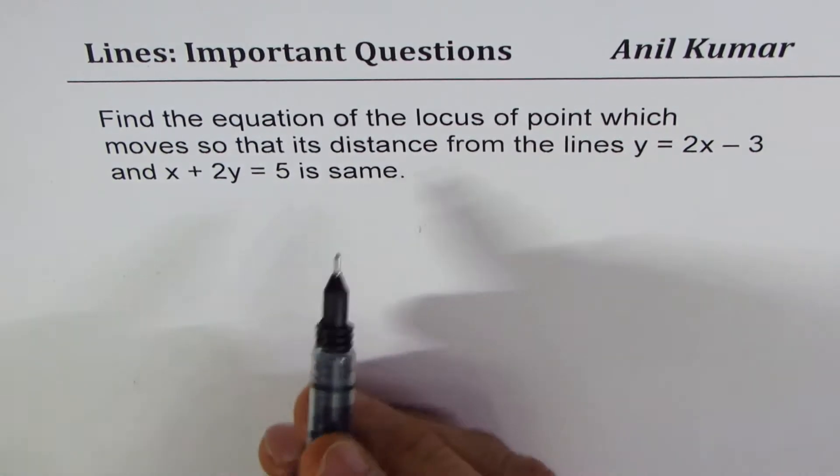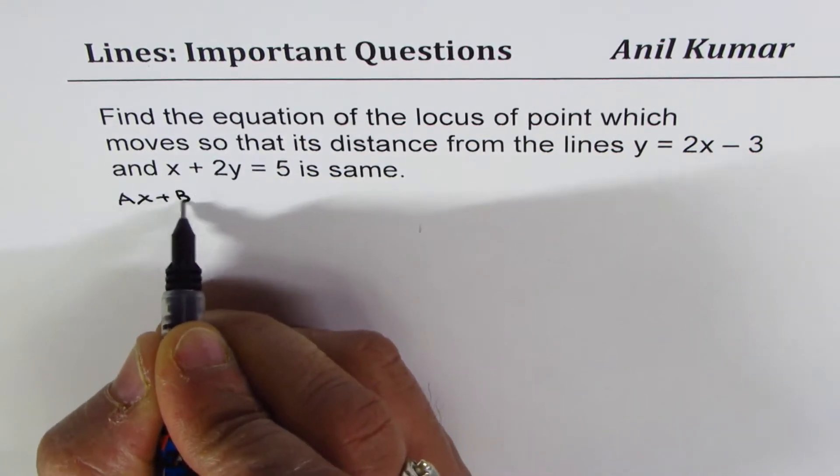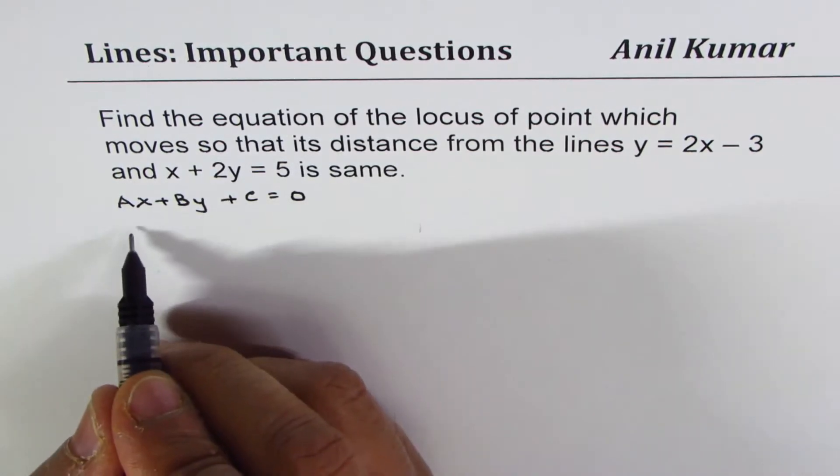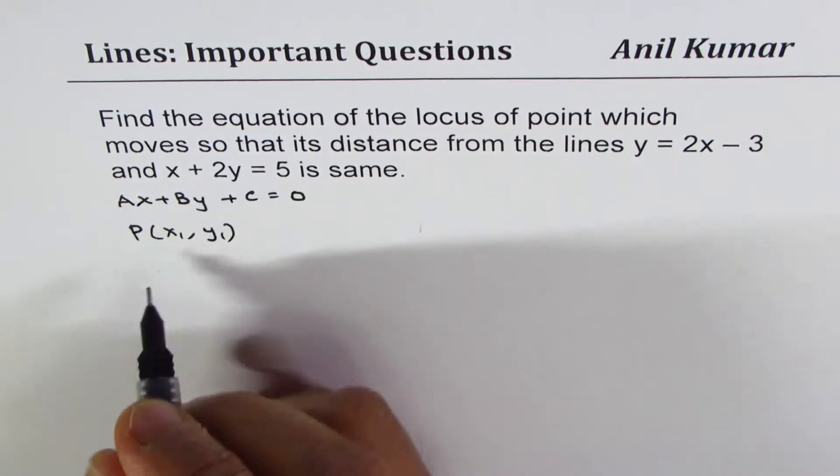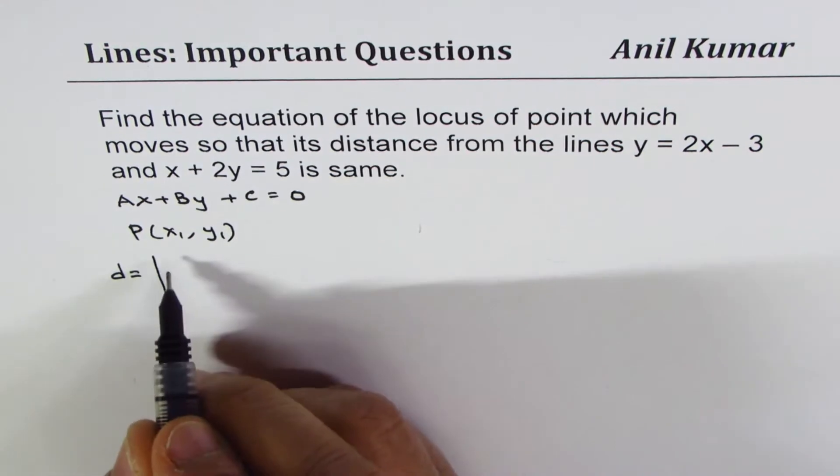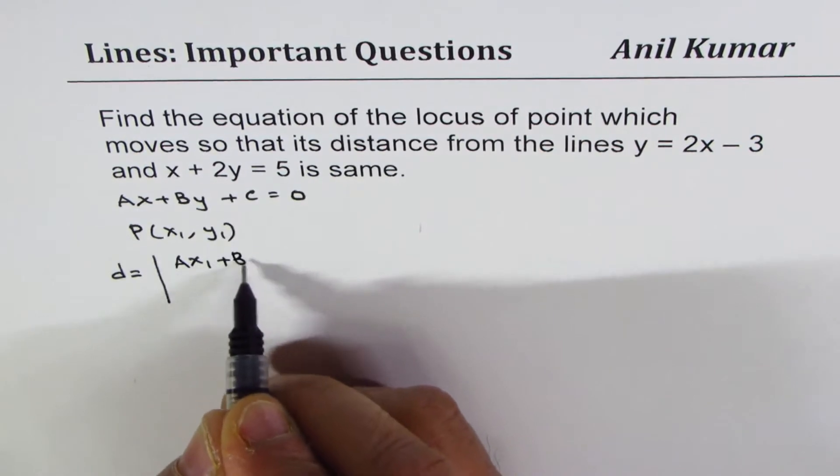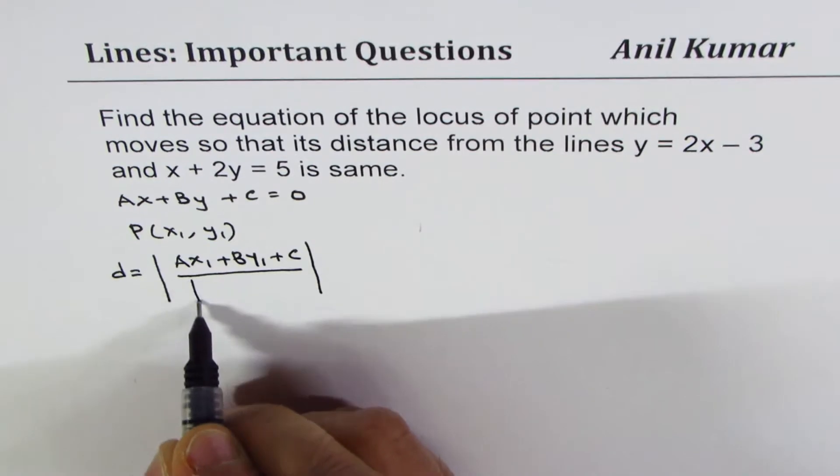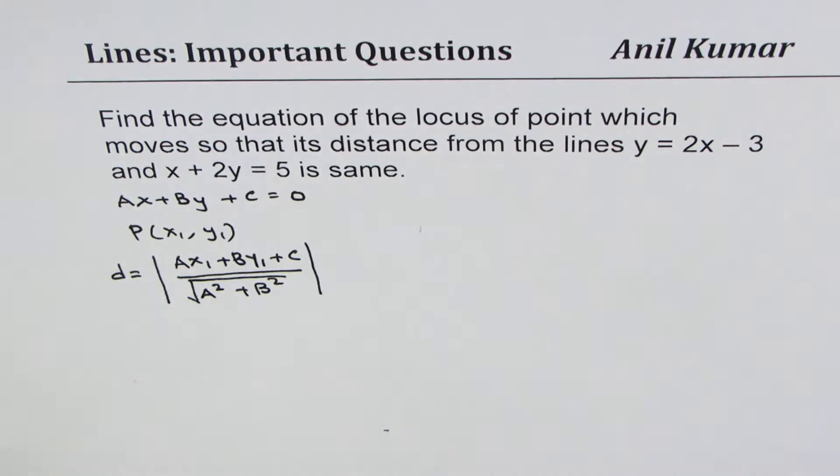Let's begin by the standard form of the equation, ax plus by plus c equals 0. If I have to find distance from a point P, let's say x1, y1, to this line, then the formula is distance equals absolute value, distance is always positive, ax1 plus by1 plus c divided by square root of a square plus b square. That gives you the distance.